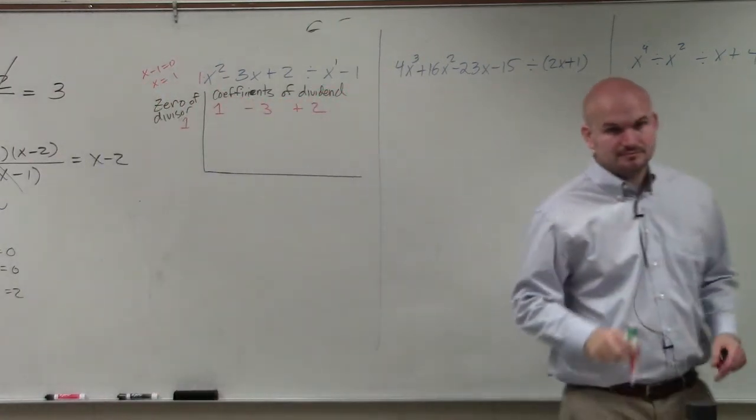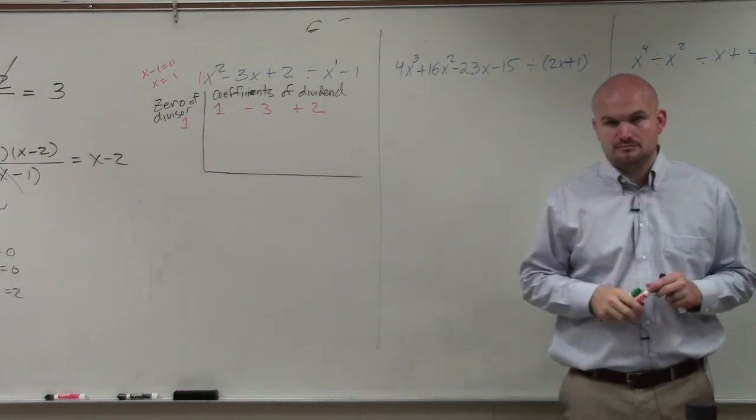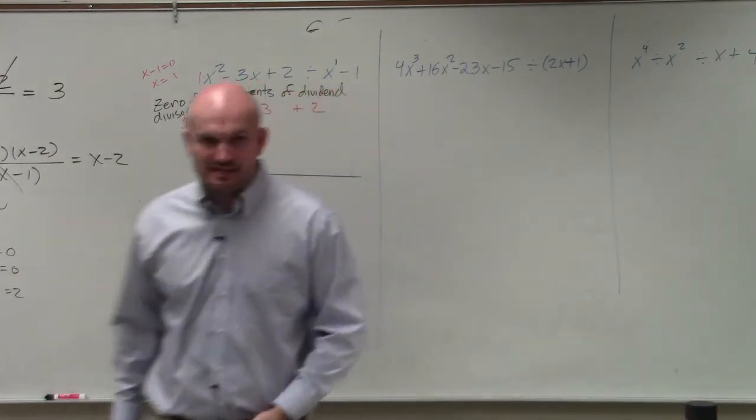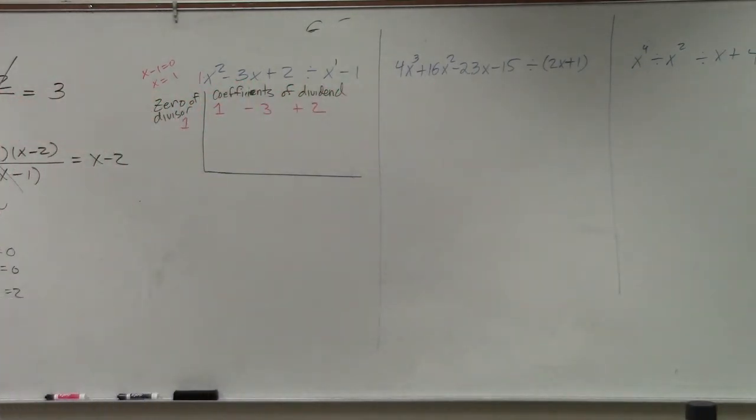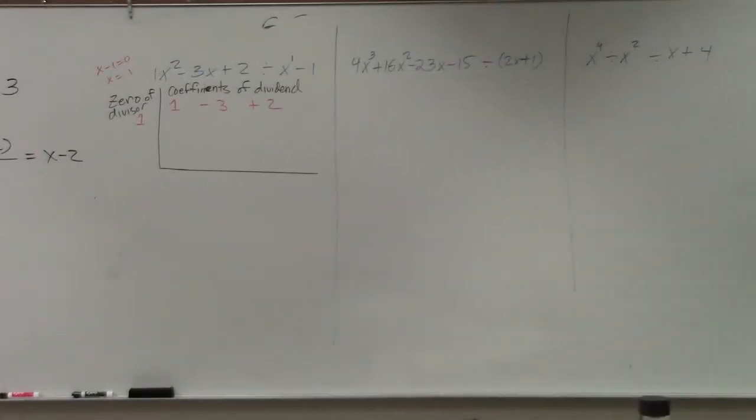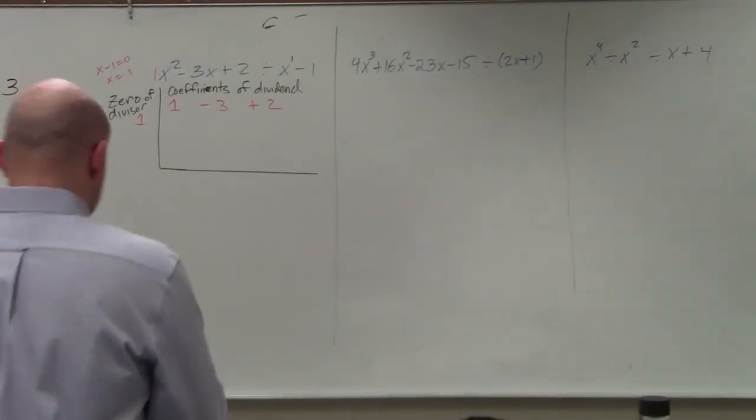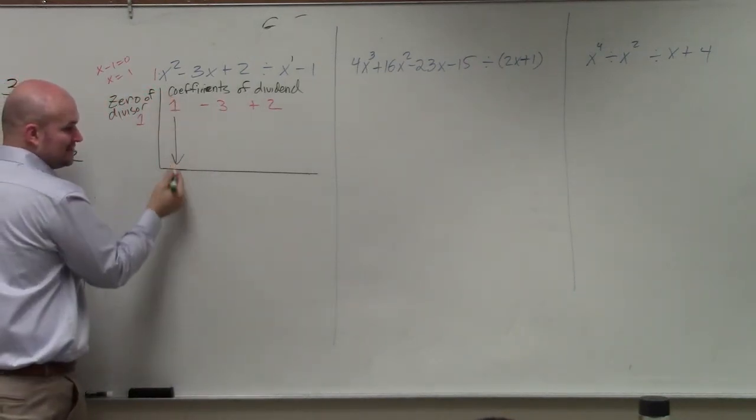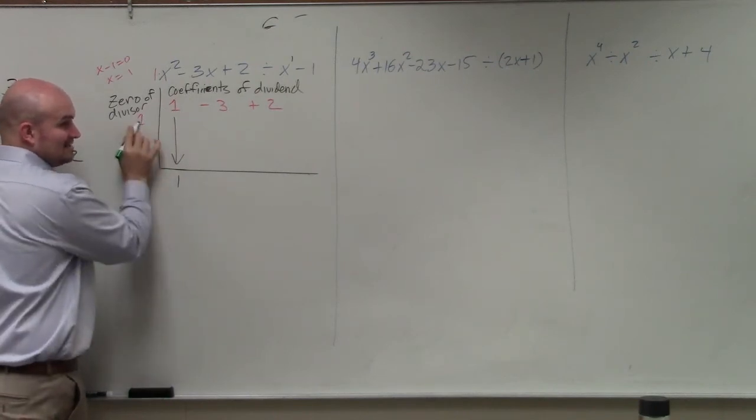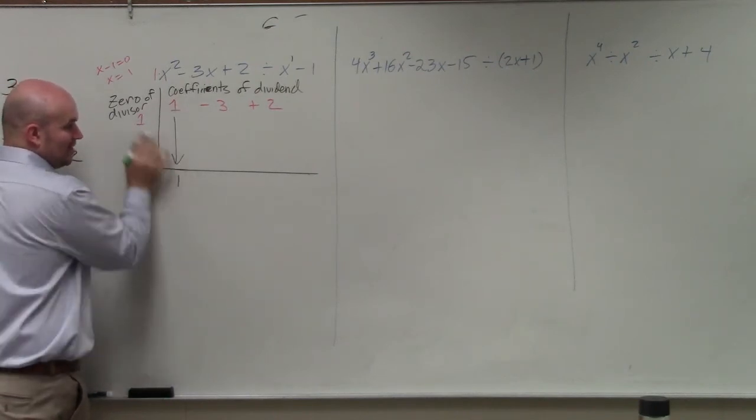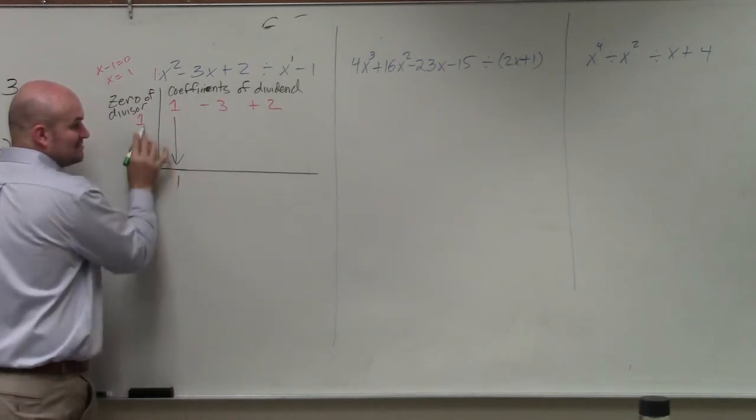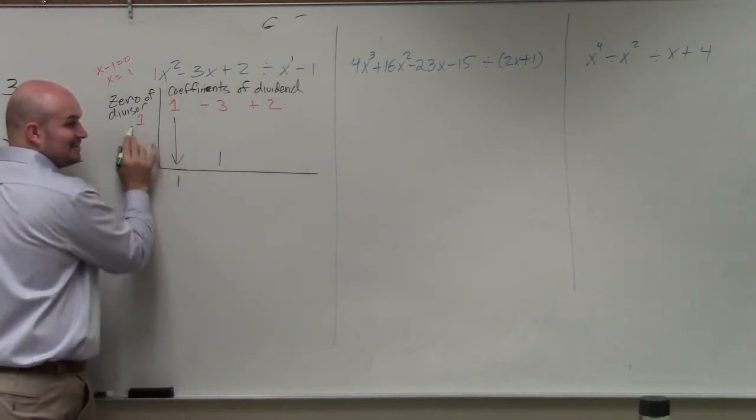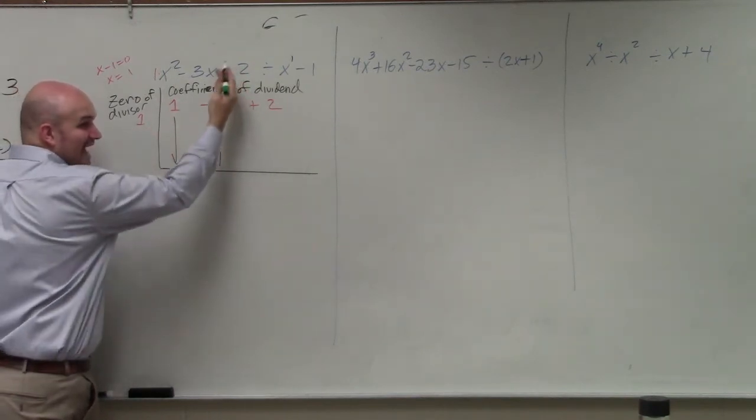Okay, synthetic division basically goes like this. What we're basically going to do is drop down the 1. So you drop down the first term, put in a 1. Multiply on the diagonals. So you bring down the 1, multiply the diagonals, which is 1 times 1 is 1. You put that over here. So you bring down the first term, multiply the diagonals, you get 1. Add on the verticals.